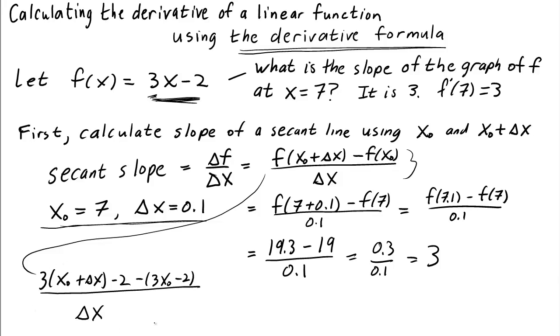So this is the slope of a generic secant line from the point x0 to the point x0 plus delta x. Well, most of the terms cancel. And we get that the slope is 3 times delta x over delta x, which is equal to 3.